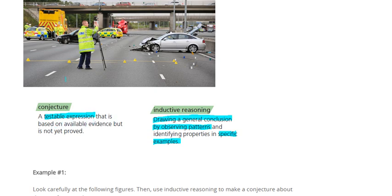but that is not yet proved. So to come up with a conjecture, we use inductive reasoning. So conjecture is a sort of a statement based on available evidence. But it's not a proven fact. It's not a proven fact. It basically is an educated guess. Okay, so you can put that down here as well. Educated guess.